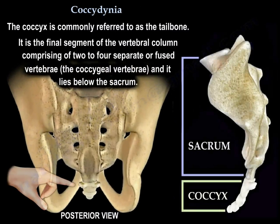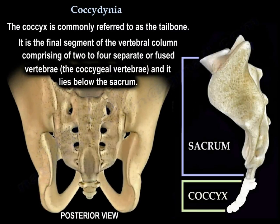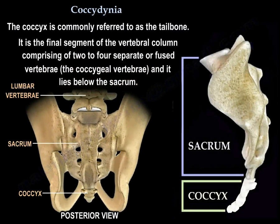The coccyx is commonly referred to as the tailbone. It is the final segment of the vertebral column, comprising two to four separate or fused vertebrae called the coccygeal vertebrae, and it lies below the sacrum.